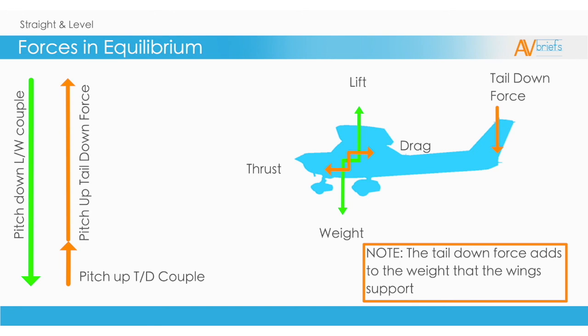We mentioned in the effects of controls that if you increase power, the nose will pitch up into the left. This couple explains why it pitches up. So if you are flying straight and level and you add power, the nose will pitch up. Likewise, reducing power will make it pitch down.